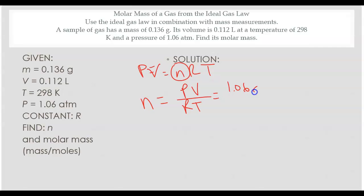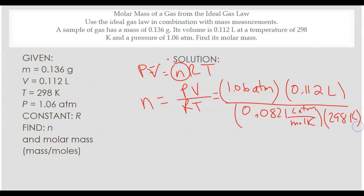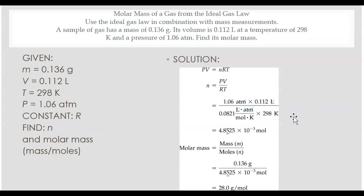So we'll plug in our numbers. You can go ahead and do this on your own if you want and solve. All right, so we're left with our moles. So our moles are going to be 4.825 times 10 to the negative third moles.